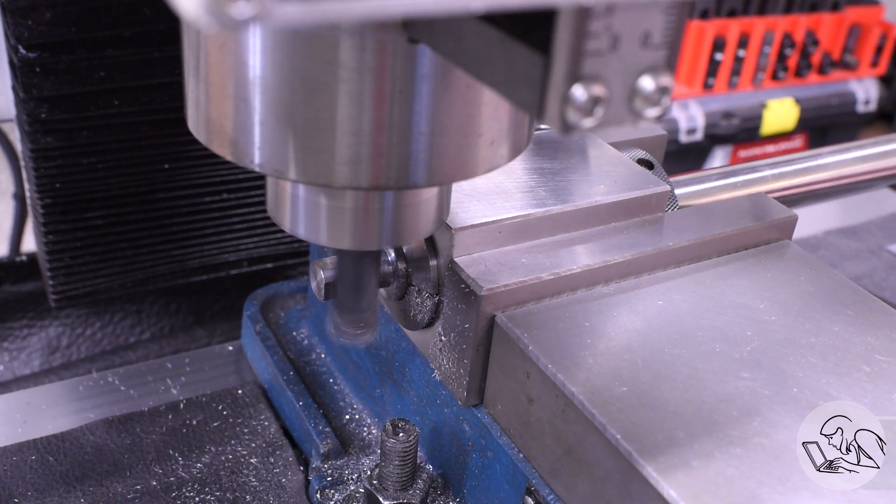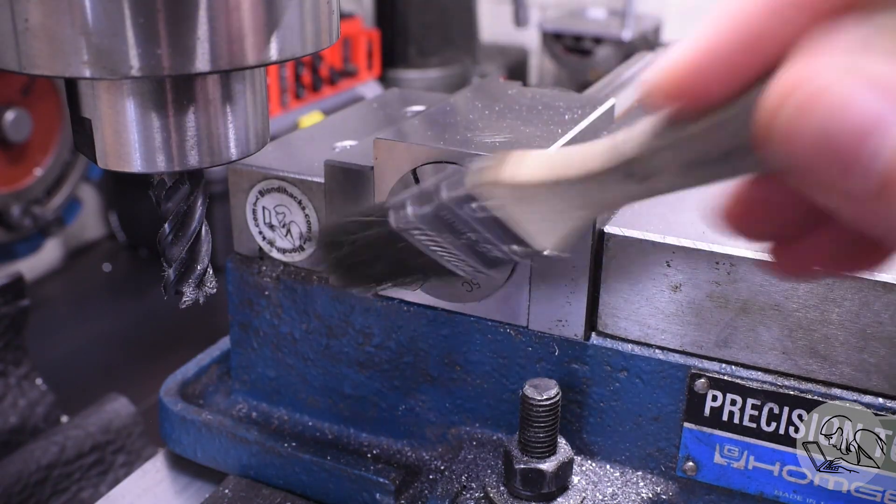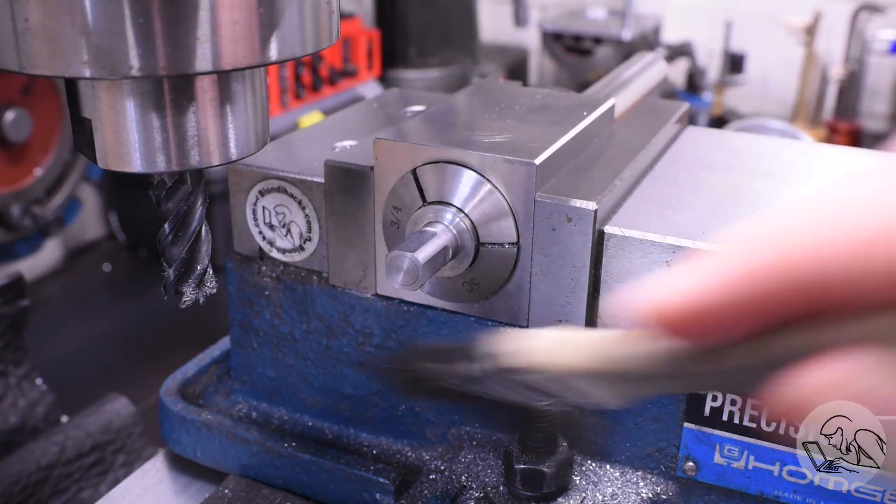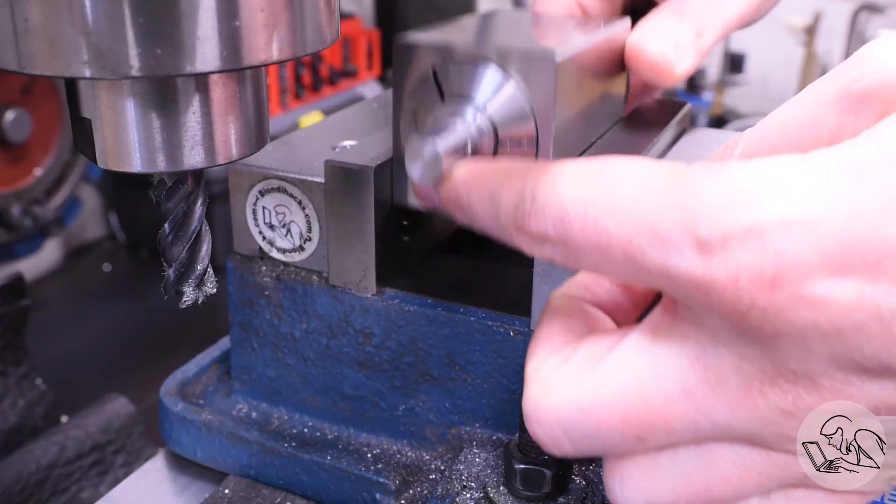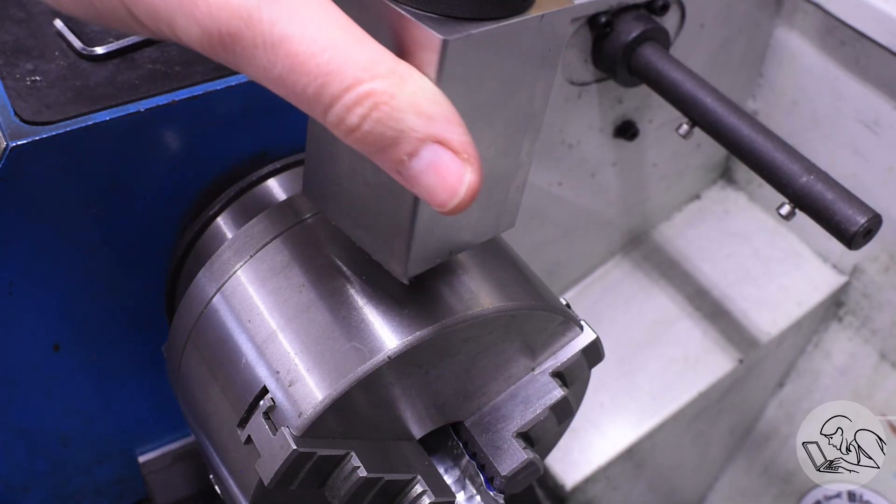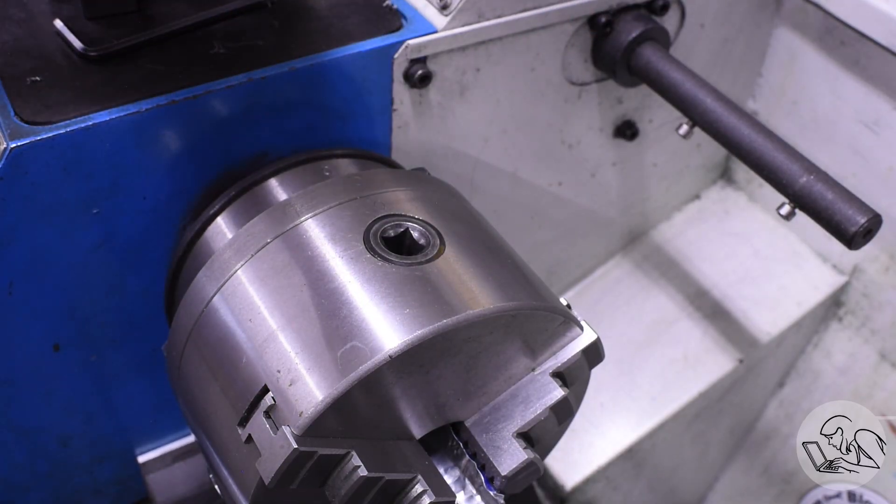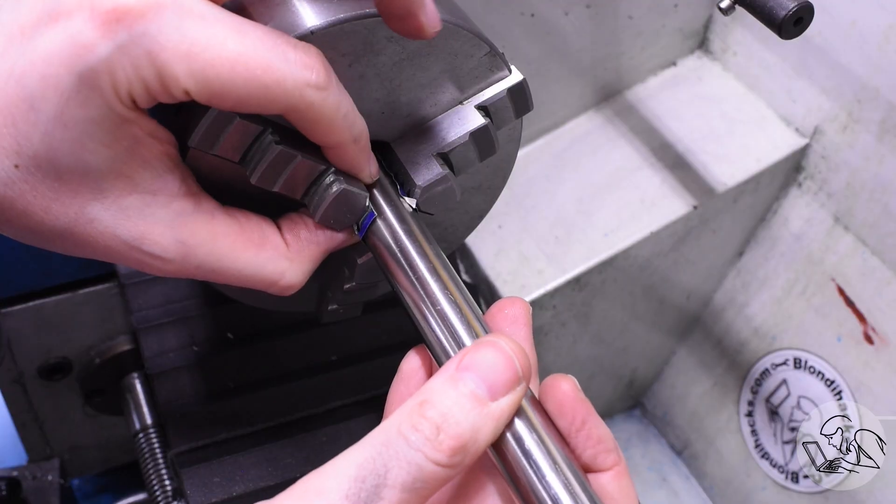You also want to be thinking about how you're going to measure each of the features that you're creating. That can affect order of operations. In this situation, the only dimension that matters is the size of that square end, and I want to make sure that's a good fit in the chuck. Use of a collet block here allows me to test fit the part in the chuck, and if I needed to make adjustments, I could go put it back in the mill because that setup was repeatable.